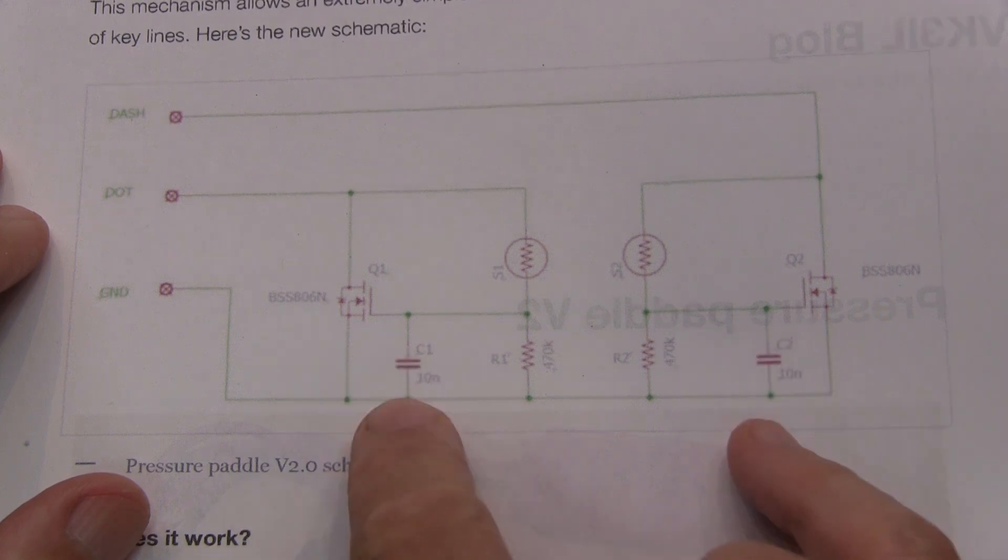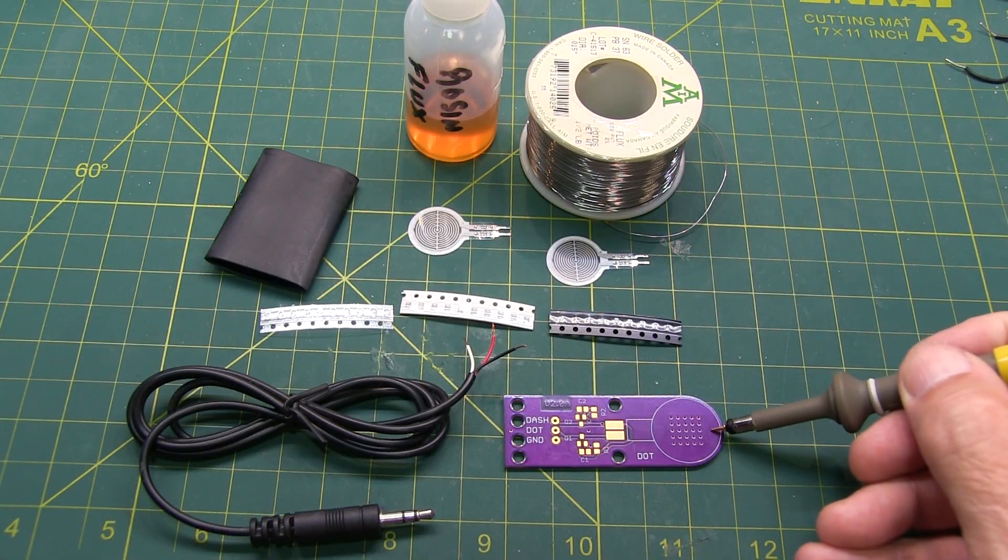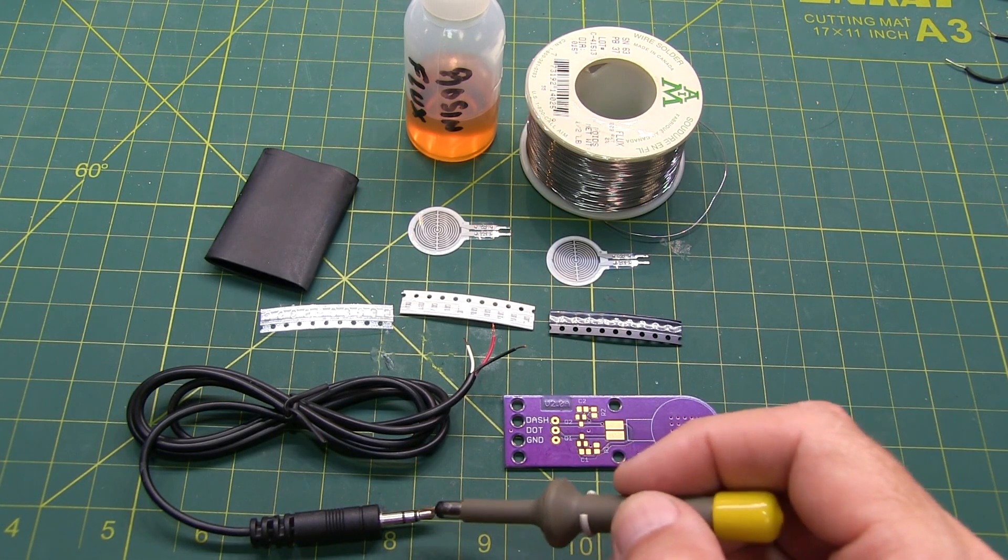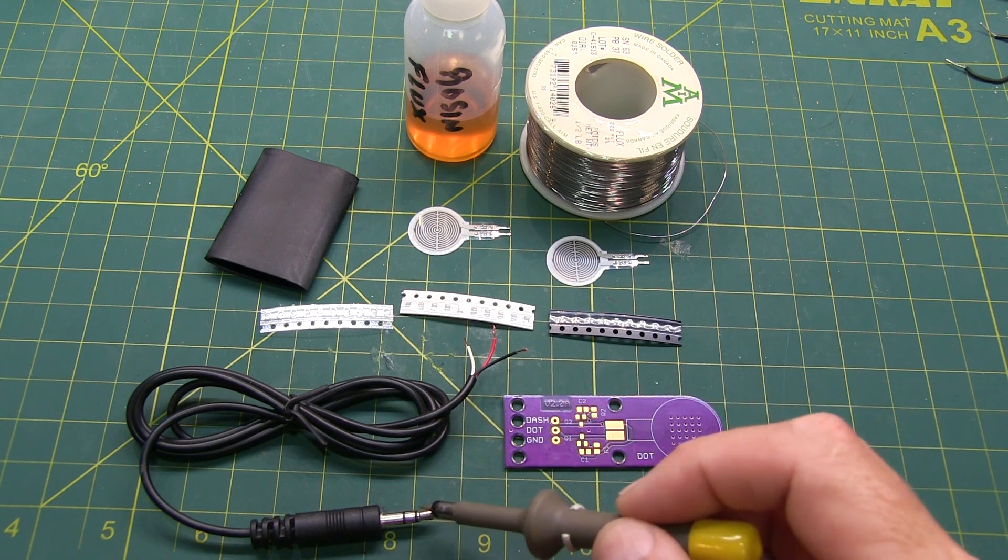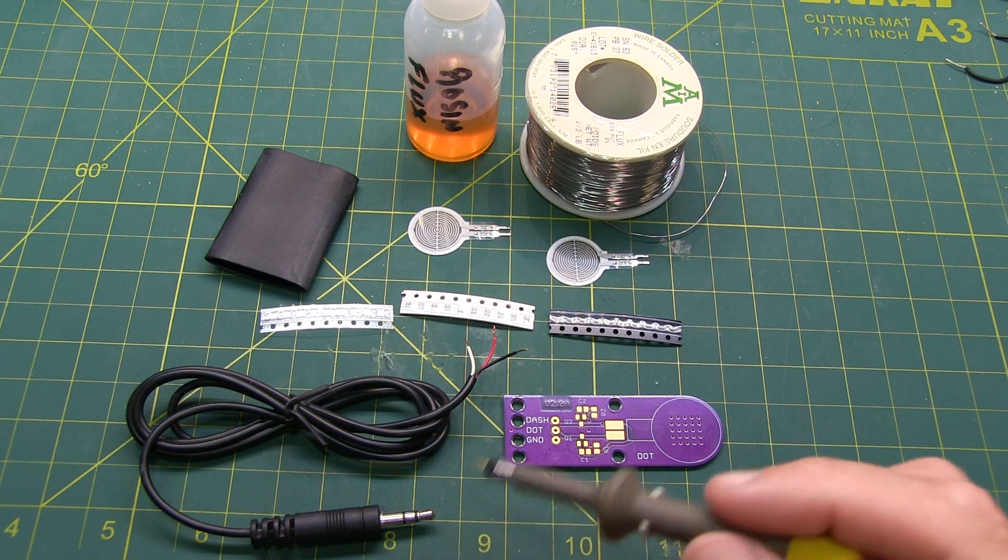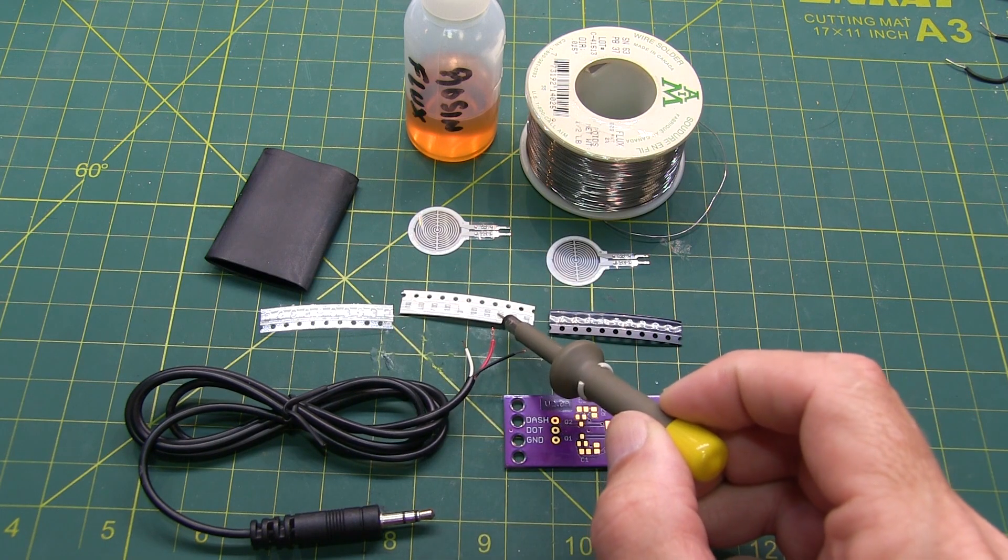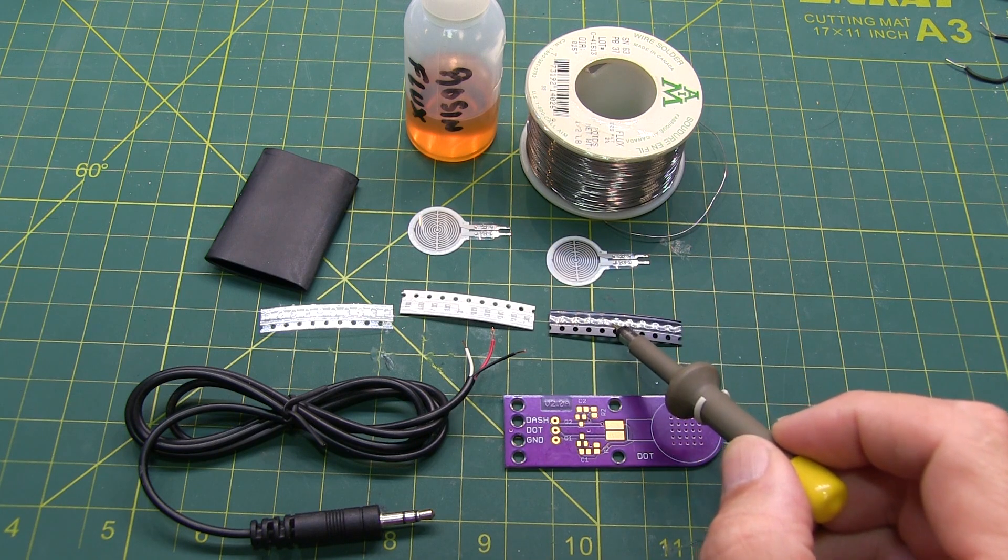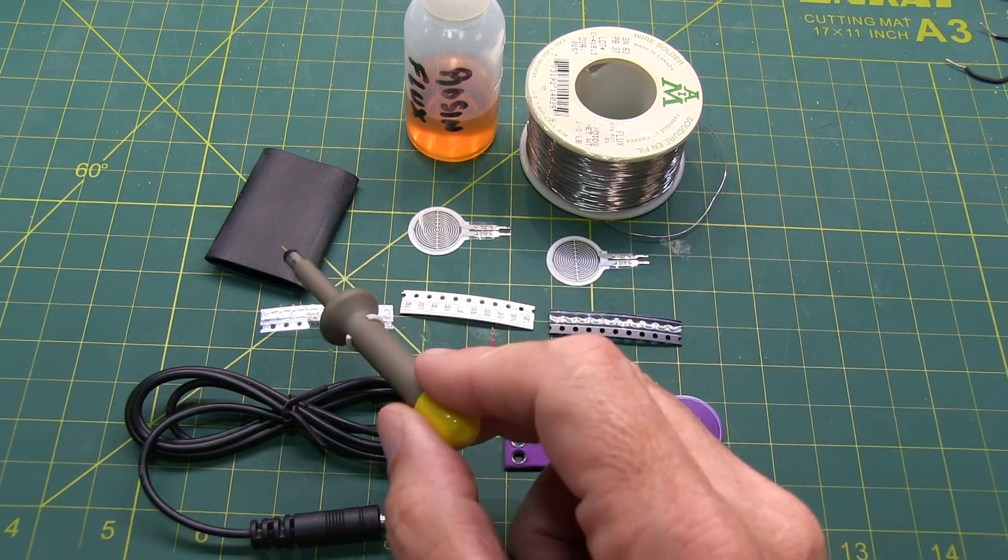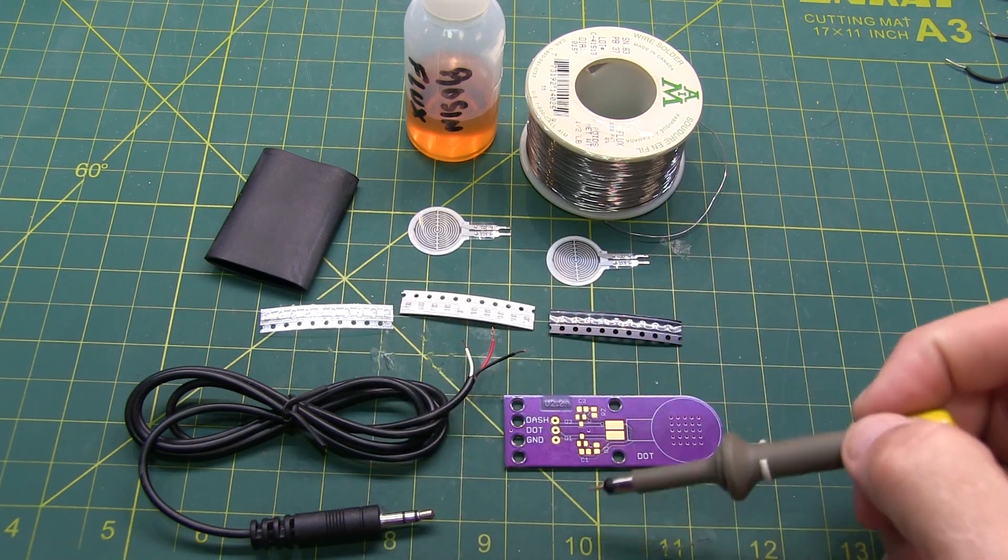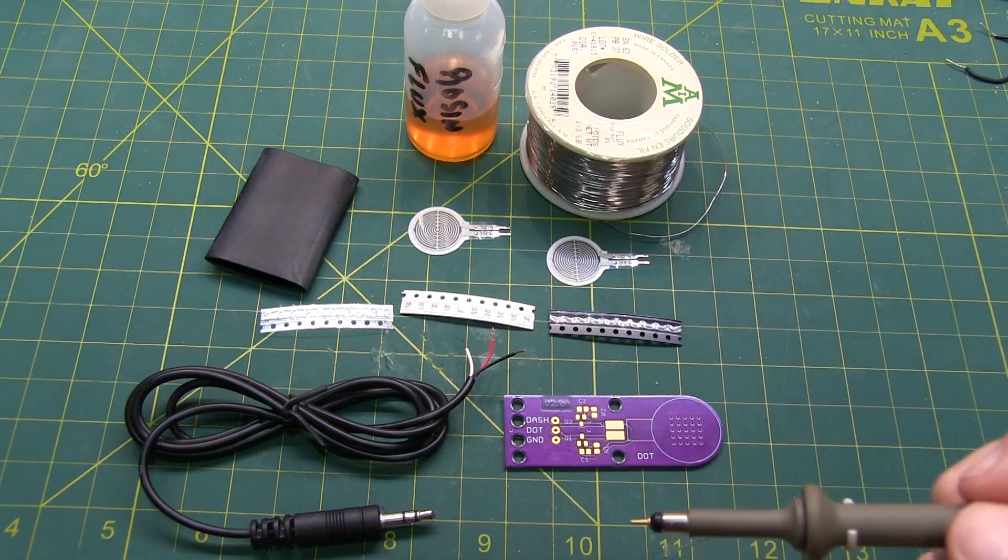So let's go put this thing together and see how it works. And here's everything we're going to need. The circuit board itself, the TRS plug and wire to hook up to the terminals here and plug into the radio to enable the keyer, the 10 nanofarad capacitors, 470k ohm resistor, the N-channel MOSFET, the two sensors for the dits and the dahs, got a large piece of heat shrink that we'll cover the whole thing with when we're done, and of course some solder and some flux to aid with assembly.